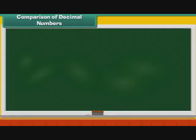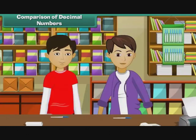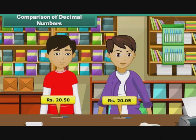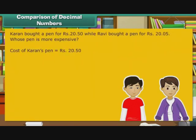Comparison of Decimal Numbers. To understand decimals better, we now compare decimal numbers with the help of expanded form, ascending and descending order. Let us look at some examples. Karan bought a pen for Rs. 20.50, while Ravi bought a pen for Rs. 20.05. Whose pen is more expensive? The cost of Karan's pen is Rs. 20.50.